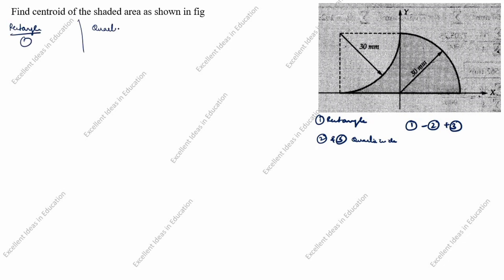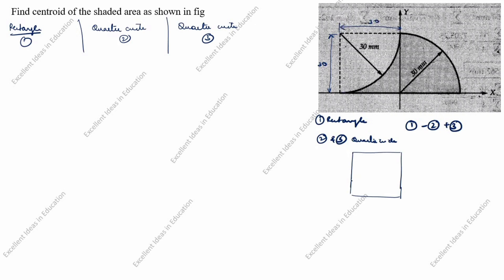Rectangle is the first shape. This length is 30, and from here to here this length is also 30. So the length and breadth are both 30, which means this is a square. What is the area of a square formula? A1 = 30 × 30 = 900 mm².